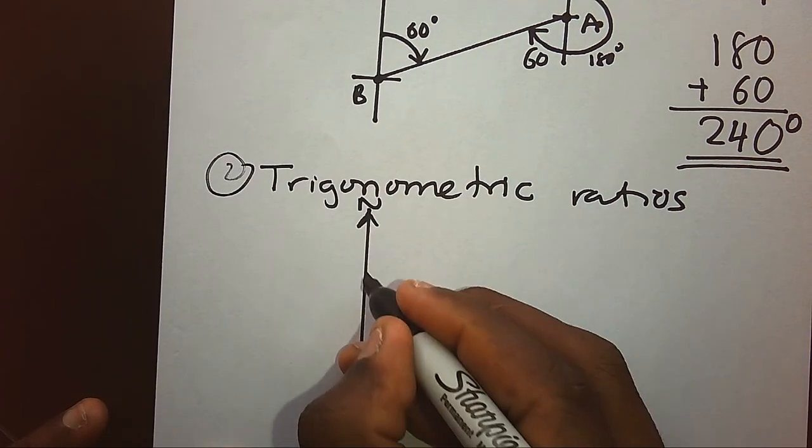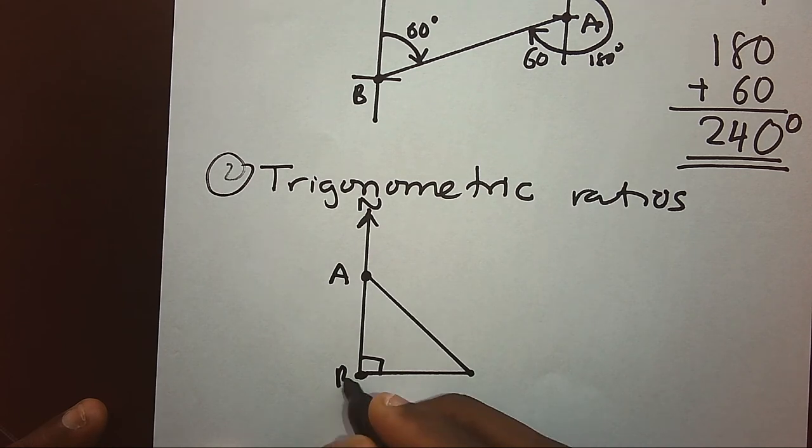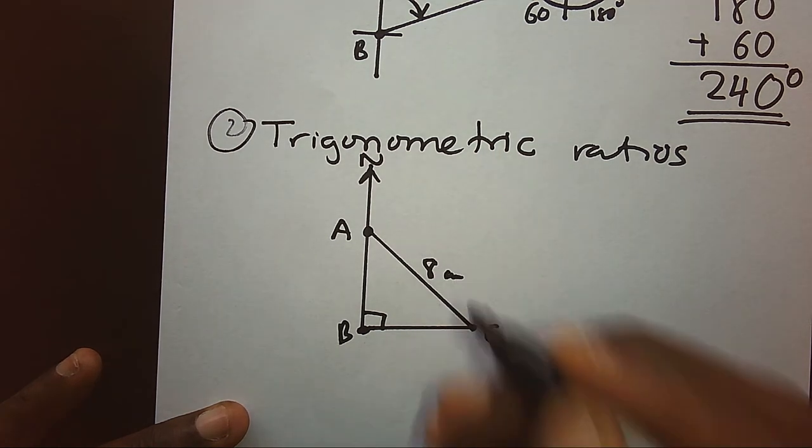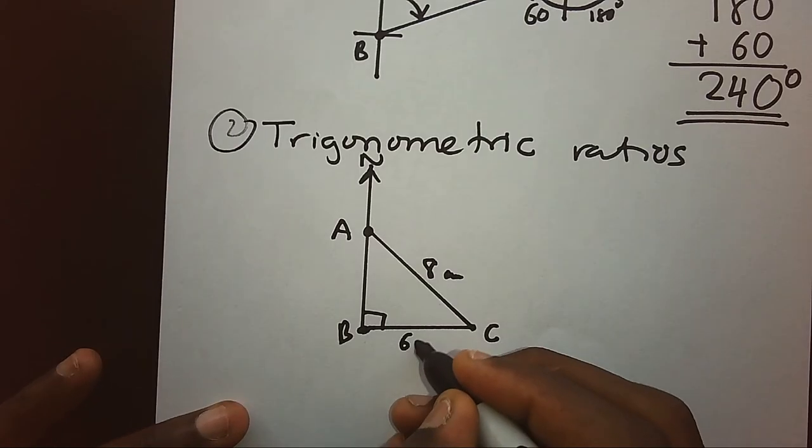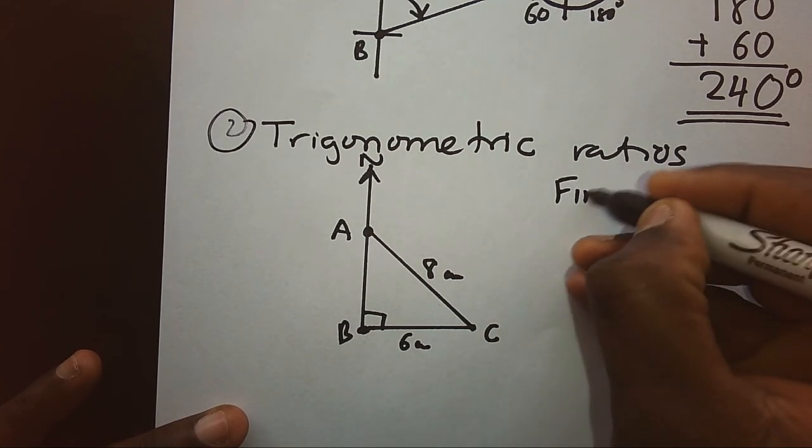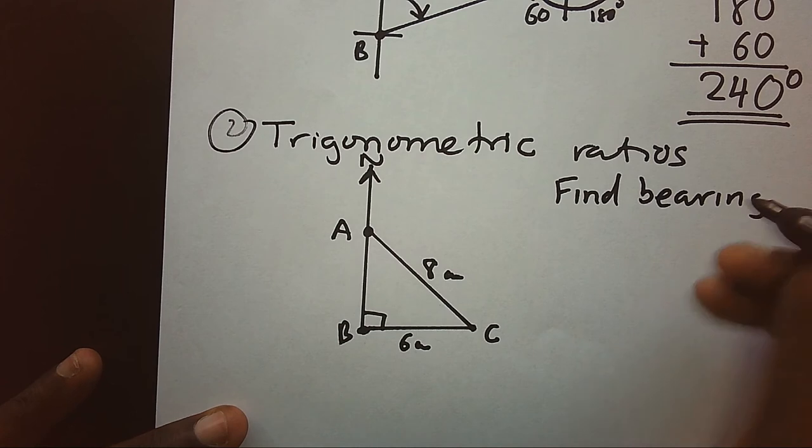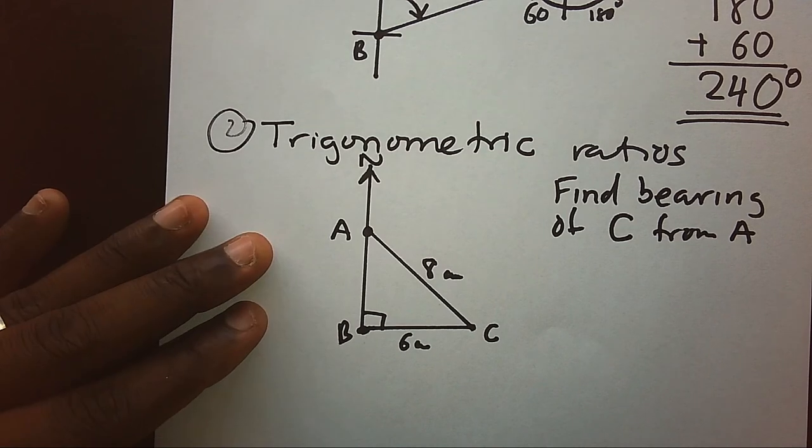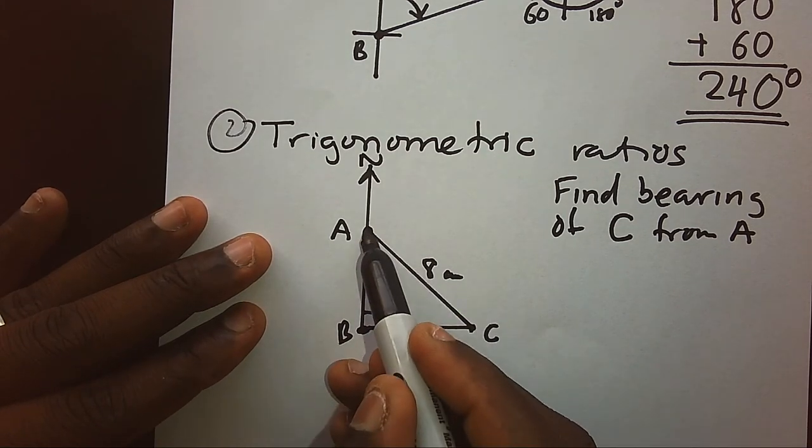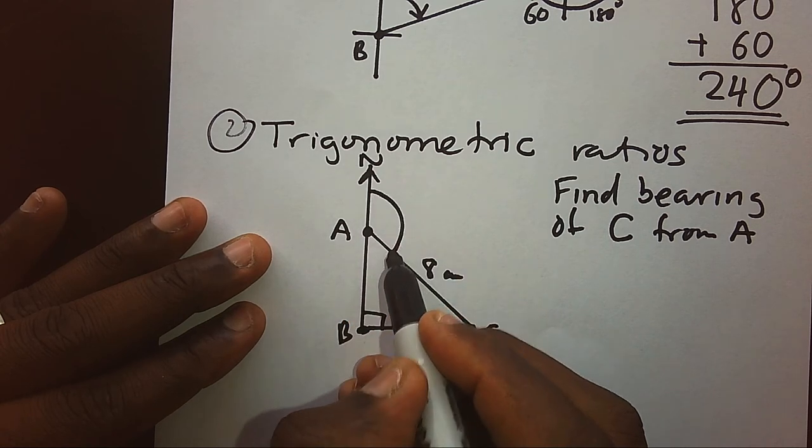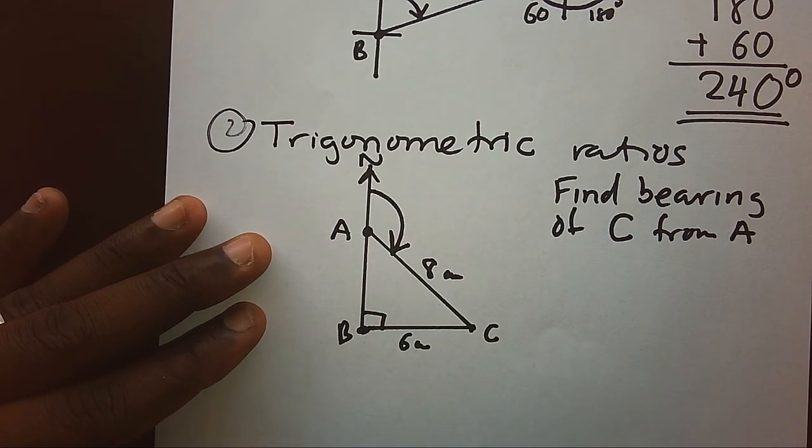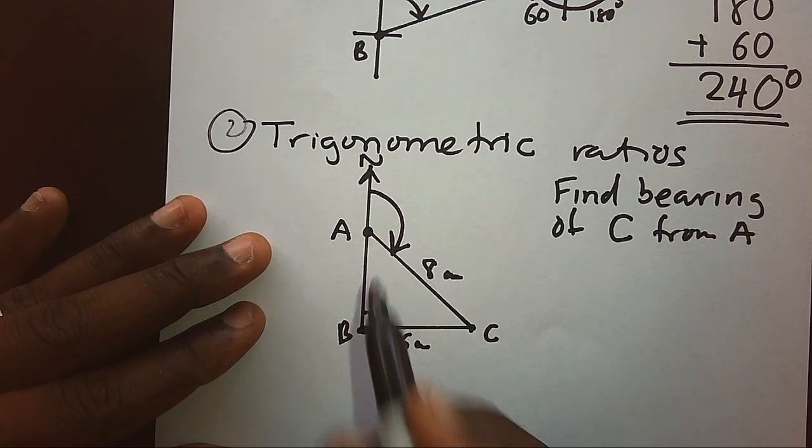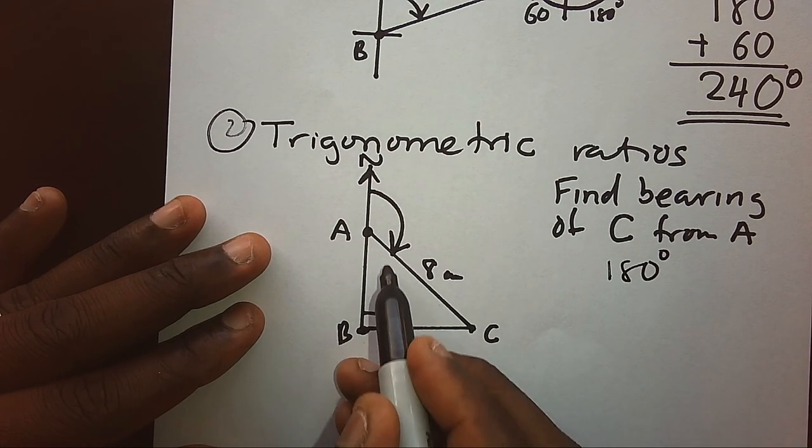Usually when we are dealing with three points and if those three points form a right angle, then this can help us to solve. Let's say we have position A, position B, and position C. Maybe we are told this is 8 centimeters and perhaps this is 6 centimeters, and we are told to find bearing of C from A. Now in order for me to find bearing of C when I'm starting at A, it means from my north I need to know this angle.